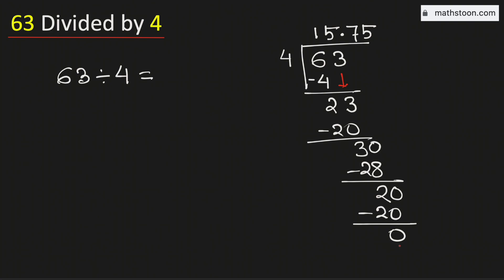As we have got the number 0, so we will stop. Therefore, 63 divided by 4 is equal to 15.75. And this is our final answer.